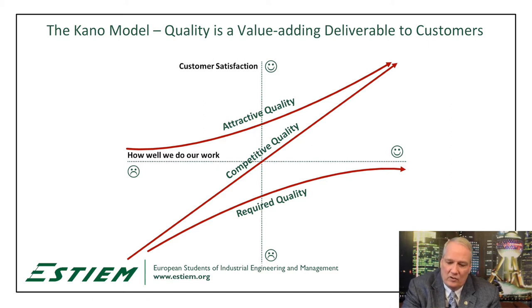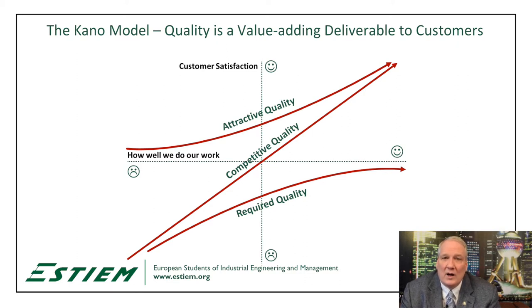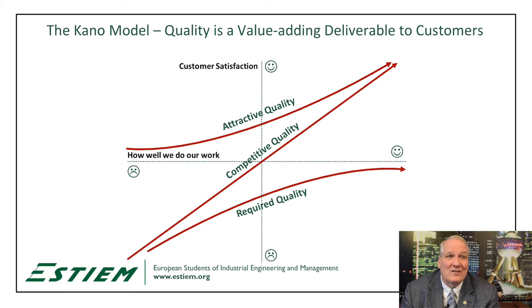The first is the bottom curve — required quality. This is what must be there for a product, service, or experience to be satisfactory at the lowest level. For instance, with a car: the car actually starts, it drives, it stops, it steers. Those don't excite us; we don't compare these things when buying a car.